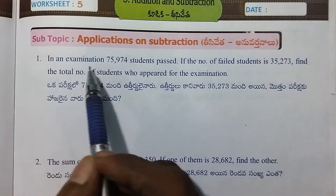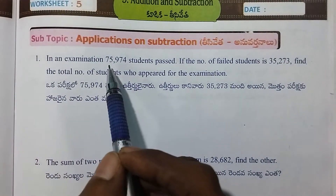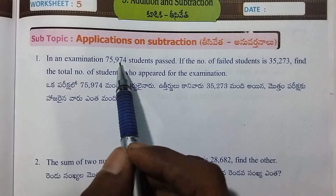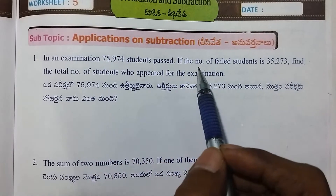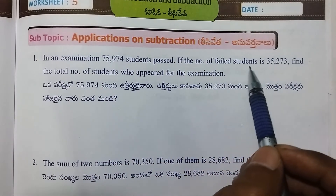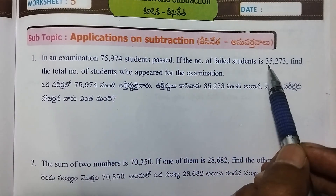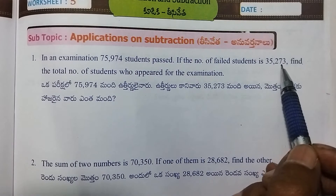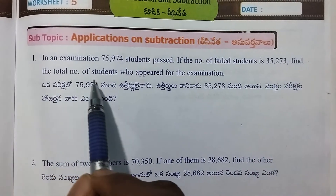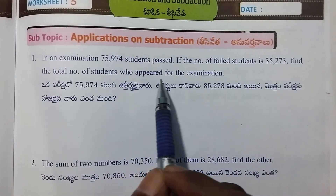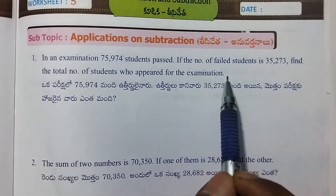In this examination, 75,974 students passed. If the number of failed students is 25,273, find the total number of students who appeared for the examination.